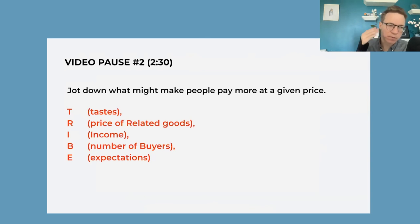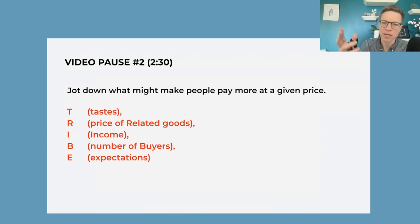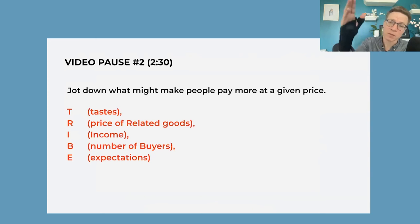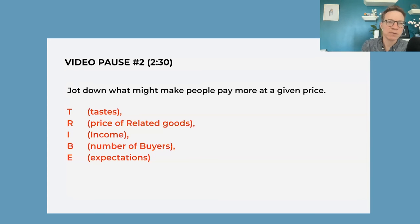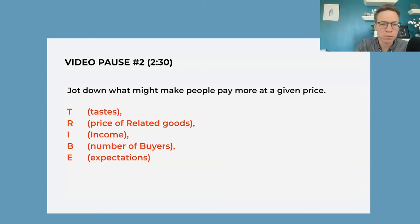Taste — something about our taste for a good has changed, related to advertising or a scientific study that comes out. Related goods — if peanut butter gets super expensive, my demand for jelly will drop. Income will also affect people's willingness to pay for goods. Number of buyers in a market will affect what the quantity sold is at any given price. And then expectations about future prices — if I think something's going to go on sale, my demand for that good will be lower in the present. So these are things that can shift the demand curve, and the video goes over them in depth.